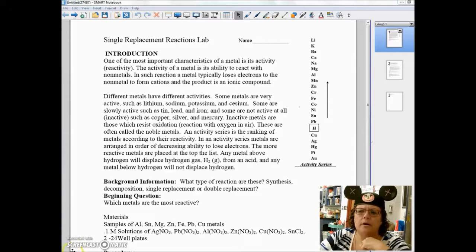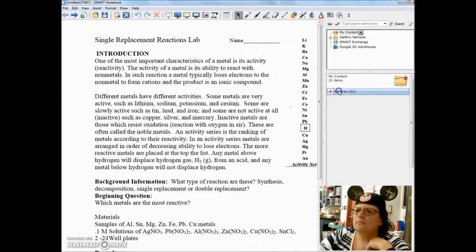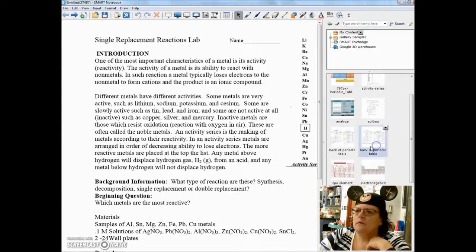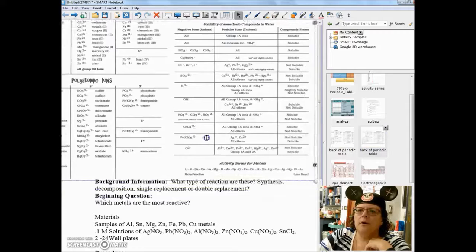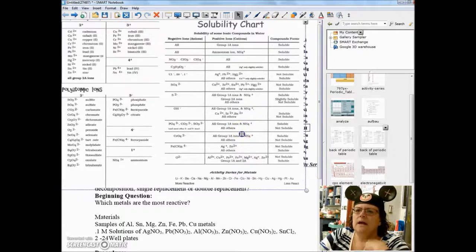If you look at the back of your periodic table, there is a list called the activity series. At the bottom of your periodic table is this list. The most reactive are on the left, the least reactive are on the right. The one that's missing from this is lead.